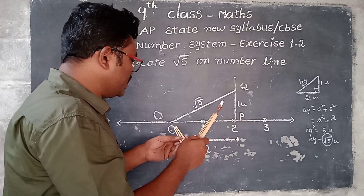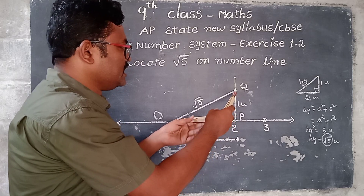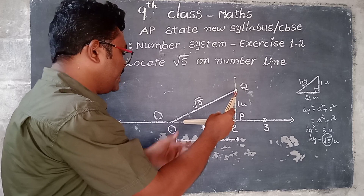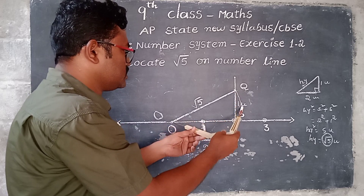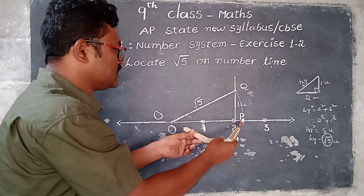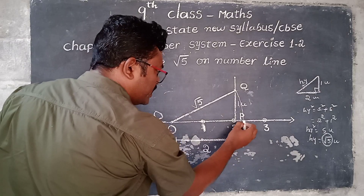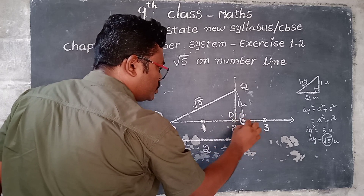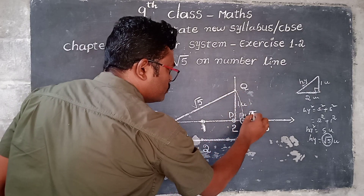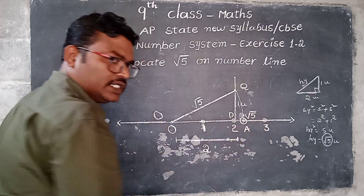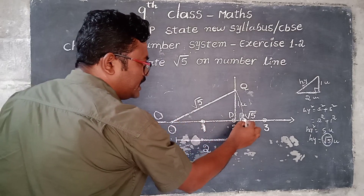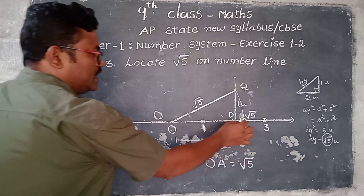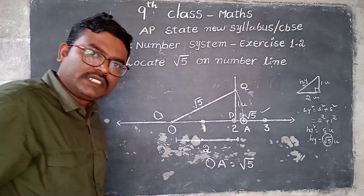To represent root 5 on the number line, this is the length OQ, which is root 5. Taking O as center and OQ as radius, draw an arc. The arc cuts the number line at some point — let this point be A. This point A shows root 5. So OA equals root 5, and that is how root 5 is represented on the number line between 2 and 3.